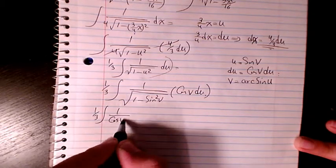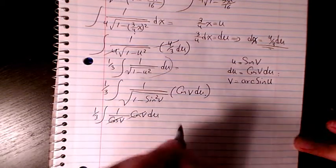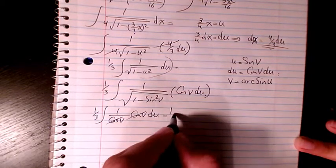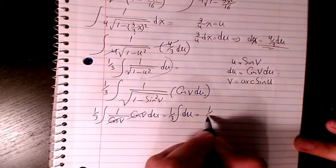be just cosine v, and here you have cosine v dv. These two cancel out and it's going to be 1 over 3 dv, which is going to be 1 over 3.